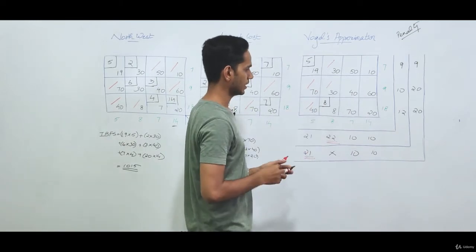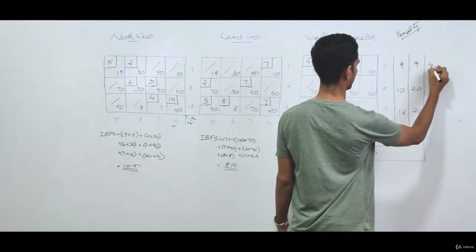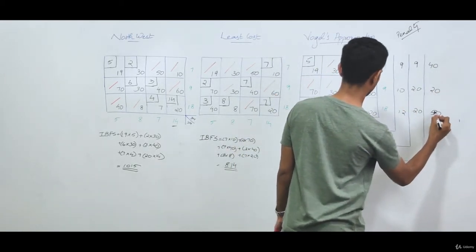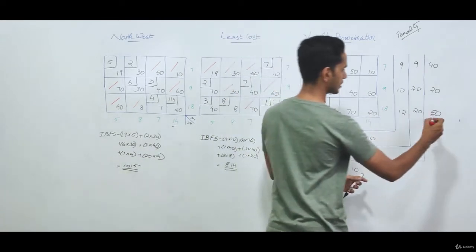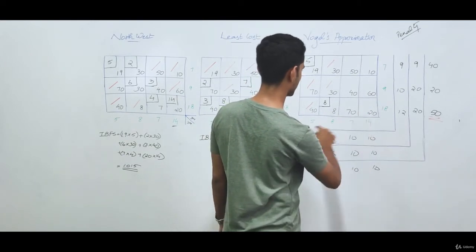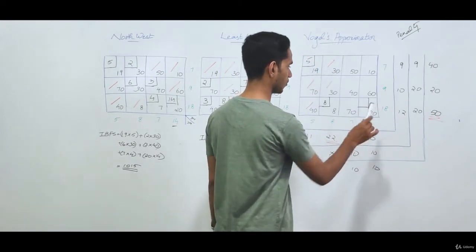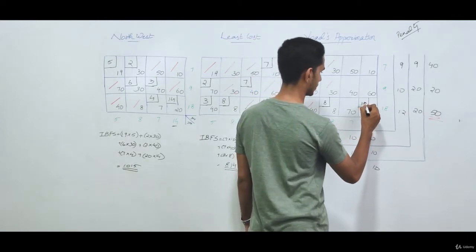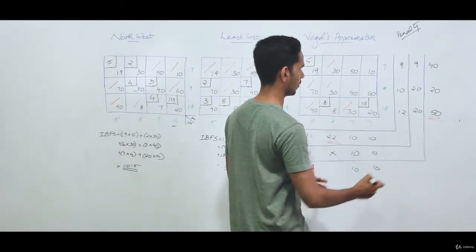After recalculating penalties again, the remaining row penalties are 40 and 20, and a column penalty is 50. The highest penalty is 50, corresponding to a row. We find the cell with the least cost in that row and allocate the maximum permissible amount: the lower of 14 or the balance of 10 remaining in row 3 after earlier allocation, so we allocate 10 and cancel that cell.